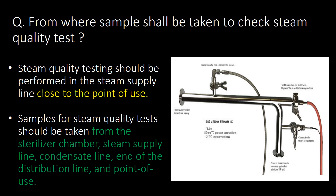From where should samples be taken to check steam quality? Steam quality testing should be performed in the steam supply line close to the point of use. Samples for steam quality testing should be taken from the sterilizer chamber, steam supply line, condensate line, end of the distribution line, and point of use.